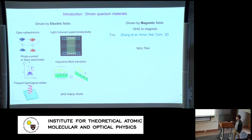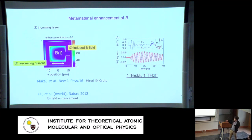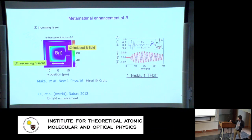We know there's a very good reason for this: the effect of magnetic fields is much weaker compared to electric fields when you have a propagating electromagnetic wave. However, there is a technique called metamaterial enhancement. There was a very nice experiment already seven years ago — I learned this from Mukai-san when I was a student at Kyoto University — where you build a metal chip on top of the material and shine a laser onto it. You can induce a current, and this current induces a magnetic field inside or around the device.